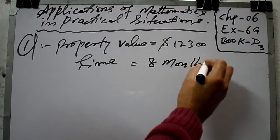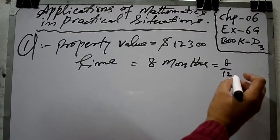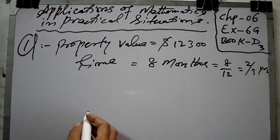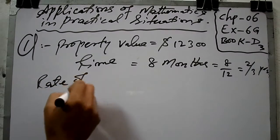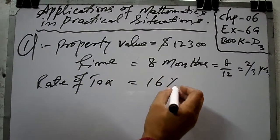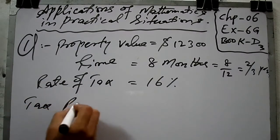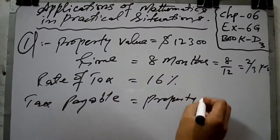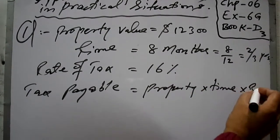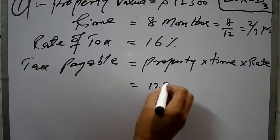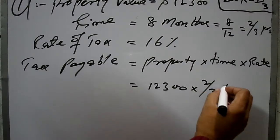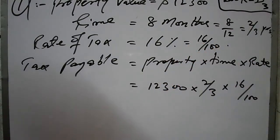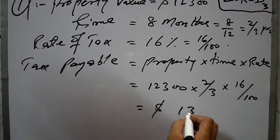Time period is eight months, equal to eight divided by twelve, which gives two-thirds of a year. Rate of tax is sixteen percent. Tax payable equals property value multiplied by time multiplied by rate, so: 12,300 × (2/3) × (16/100).